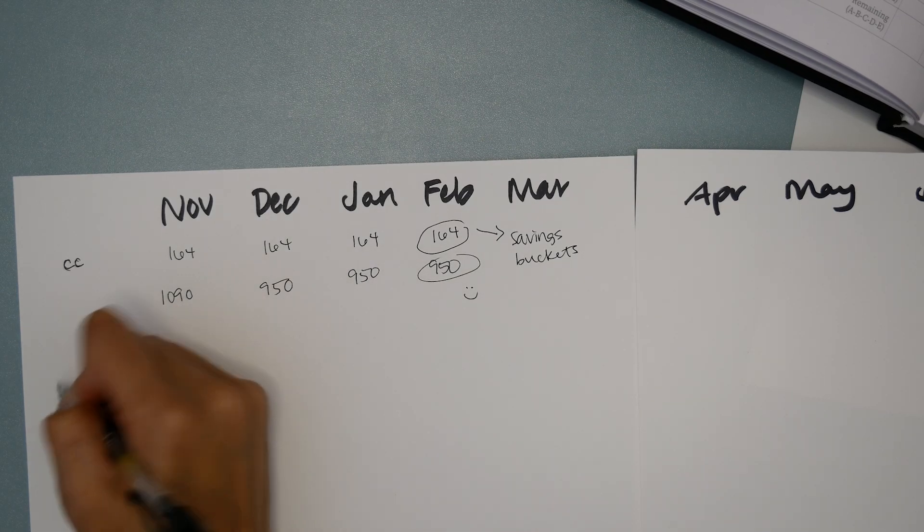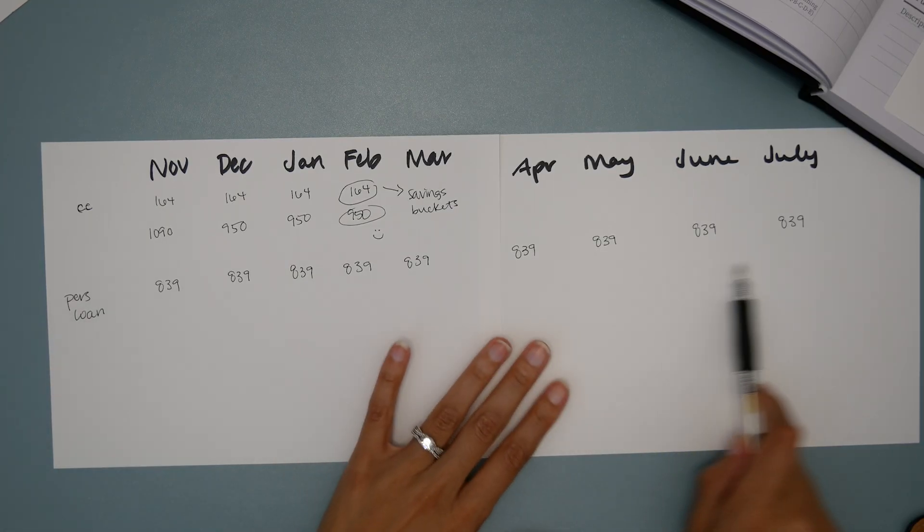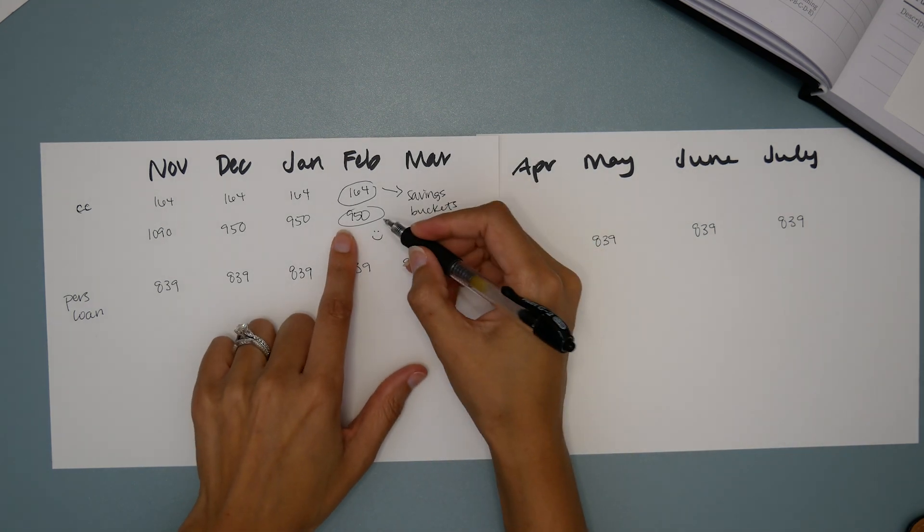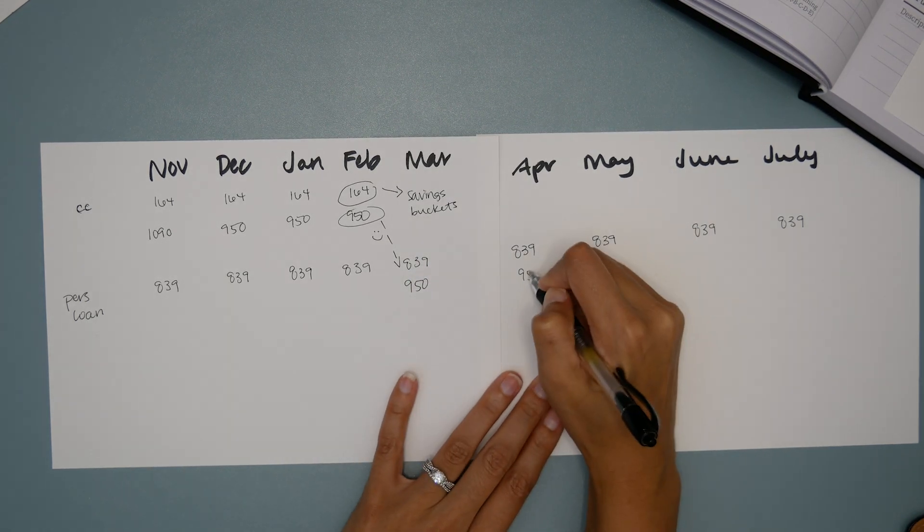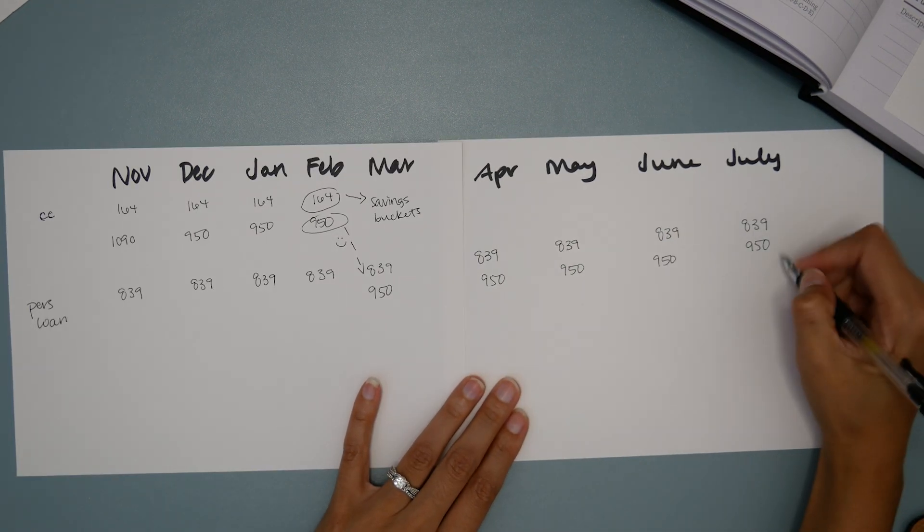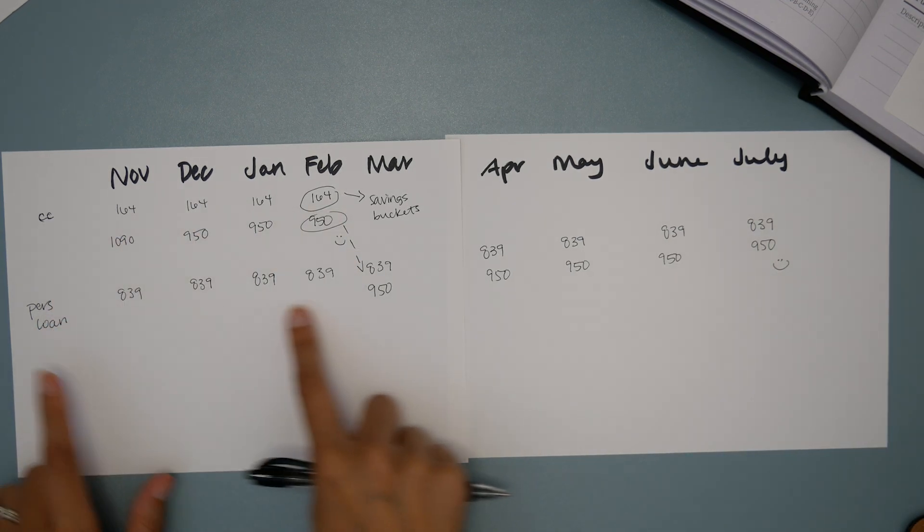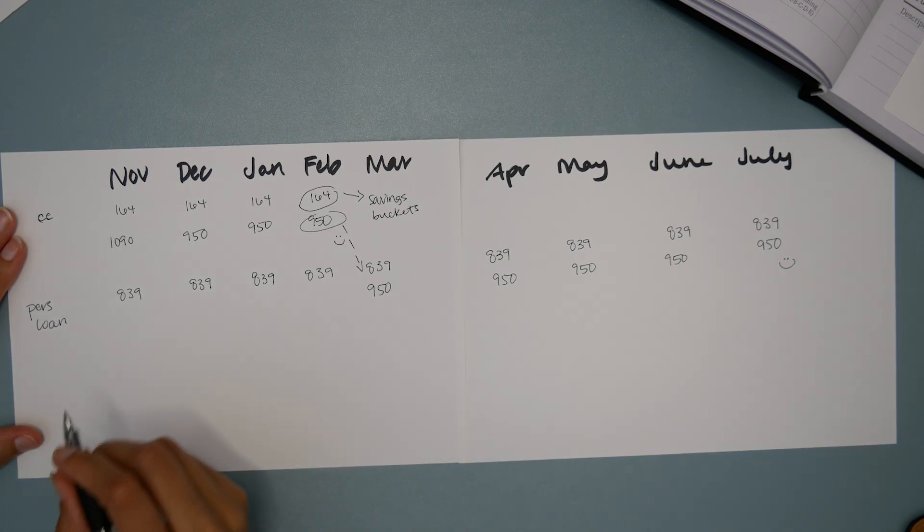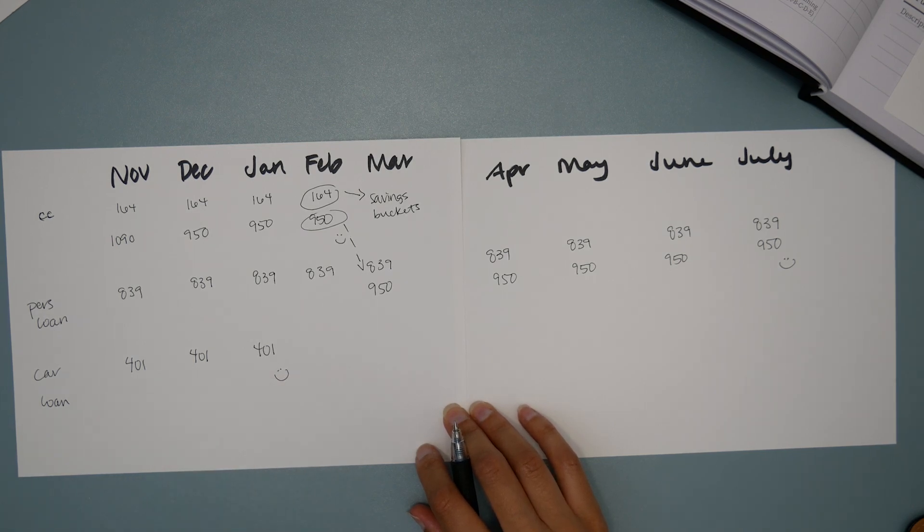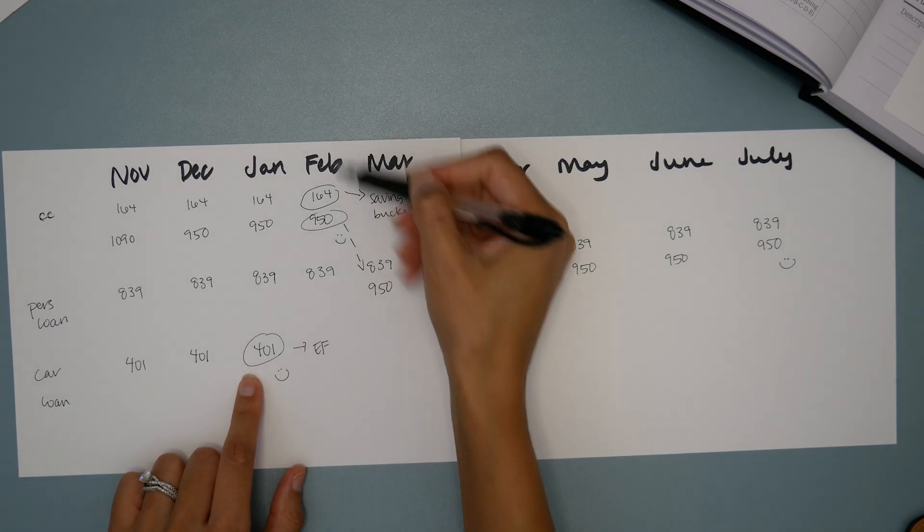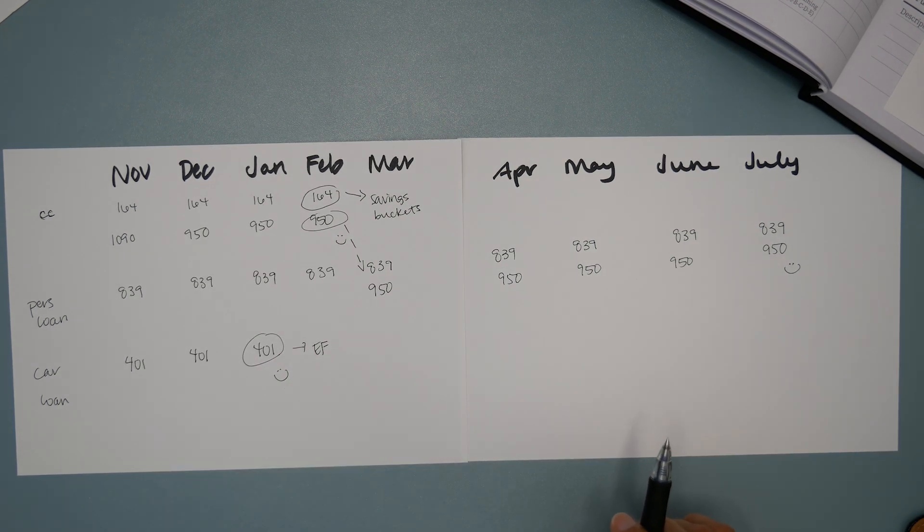Let's look at the personal loan. For this one, it's an $839 minimum payment. But here's the thing. If starting in March, this $950 then becomes additional payments on the personal loan and she keeps that up through July, it is at that point that the personal loan would be paid off. We see the payoff plan for the credit card up here. This is what the personal loan payoff would look like. Finally, let's look at the car loan. Minimum payment is $401. We just need three more payments on that car and it's paid off. So I would take this $401 and starting in February, go ahead and push that to the emergency fund working towards that starter goal.